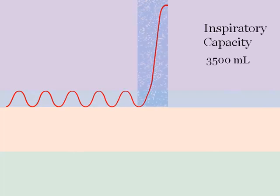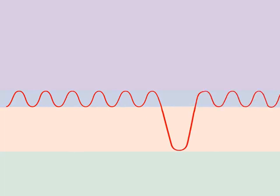Inspiratory capacity is how much air you can breathe in, which is the normal breath or tidal volume plus the extra breath or inspiratory reserve volume, totaling about 3500 milliliters. Functional residual capacity is how much air is left in the lungs after normal exhalation.